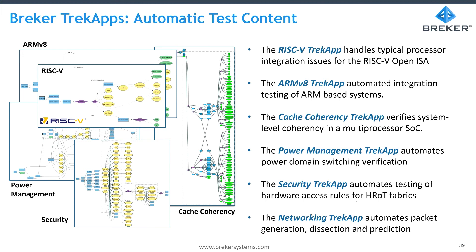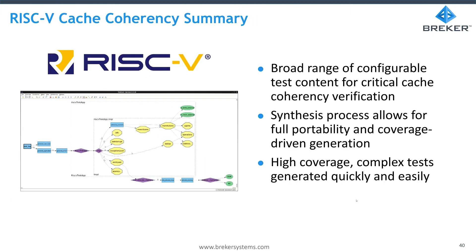The RISC-V coherency app is just one of the apps we've been working on, each developed in partnership with customers. The RISC-V one has been developed in conjunction with SCI-V. We have a similar one for ARMv8, a cache coherency app that is architecture-neutral for things like DSPs, a security app to check security where hardware is the root of trust, and a networking app organized around packetized data for Ethernet and 5G. To summarize: cache coherency is becoming a major problem for RISC-V based SOCs, especially the larger ones. We are using planning algorithms to synthesize test cases, and results show very high coverage for very complex scenarios, allowing us to find and correct bugs much sooner. Thank you very much.